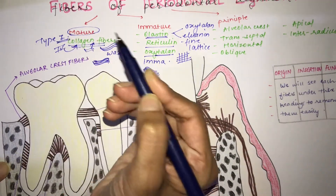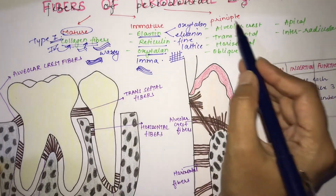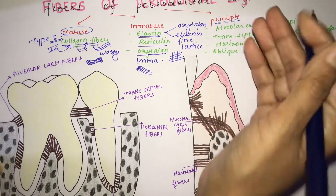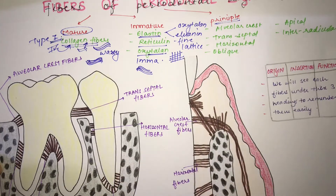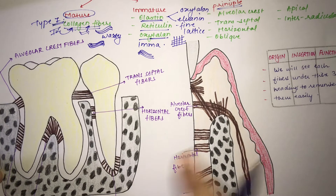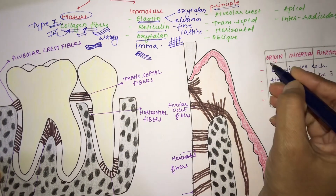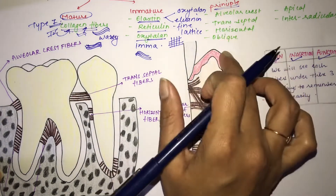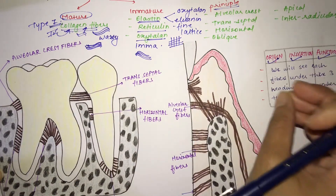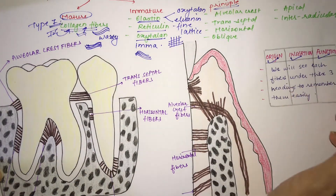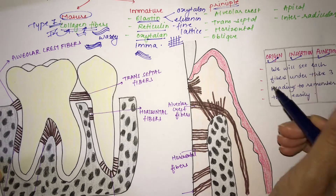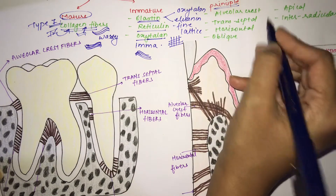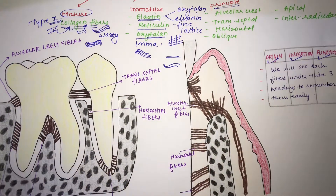Now moving to the most important type: the principal fibers. As the name suggests, they are the main fibers of your periodontal ligament. We are going to see each fiber under three subheadings — origin, insertion, and function — which makes it easy to learn in table form and helps you score full marks in exams.